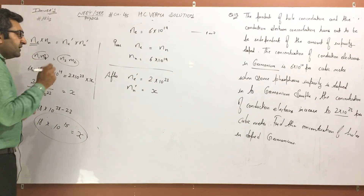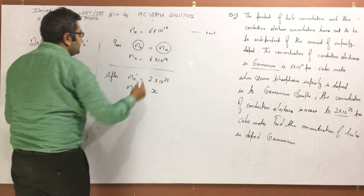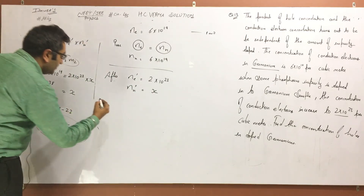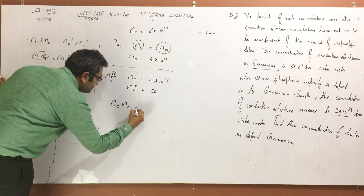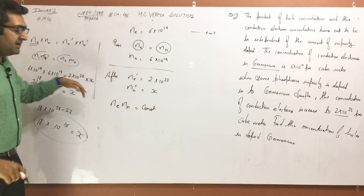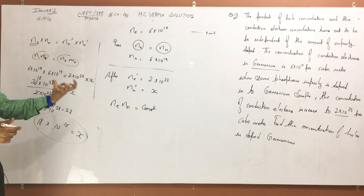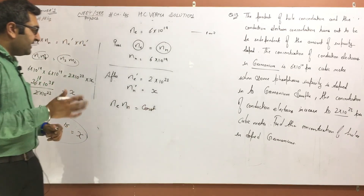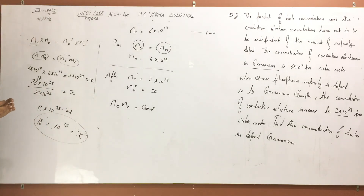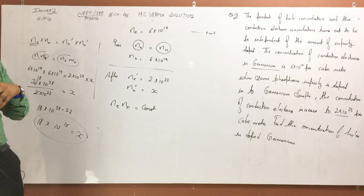You have two things to remember: in the pure state, number of electrons equals number of holes. When we do doping, n_e × n_h equals constant — the product of number of electrons multiplied by number of holes is equal to a constant. This product remains constant regardless of doping. I hope the concept is clear. If not, comment in the comment box. Please subscribe to the channel, like the video, and share the channel. Thank you.